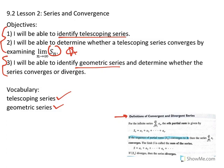If you have an infinite series, S sub n represents the nth partial sum, which is the sum of the first n terms. We learned what it means for an infinite series to converge: we consider the sequence of partial sums. If the sequence of partial sums converges, then we say the series converges. This relates to what we learned yesterday.